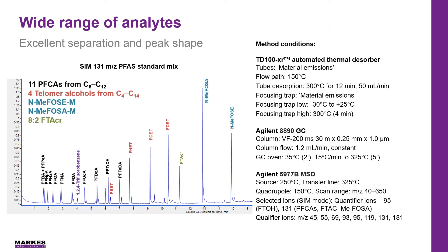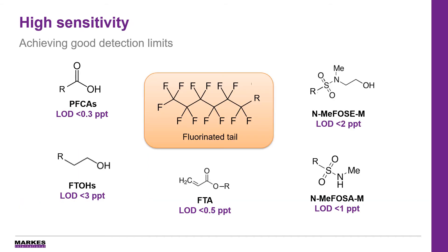From our chromatogram of our standard mix of 18 compounds, we can see that we have great separation and excellent peak shape for a wide range of volatile and semi-volatile PFAS compounds over a broad concentration range. For this work we used a Marks TD100XR automated thermal desorber and an Agilent 8890 GC and 5977B MSD. We can confirm that using current technology with off-the-shelf sampling devices we can sample volatile PFAS in air, and we've achieved great detection limits below one PPT for all of the PFCAs and below three PPT for all of the compounds within the standard.